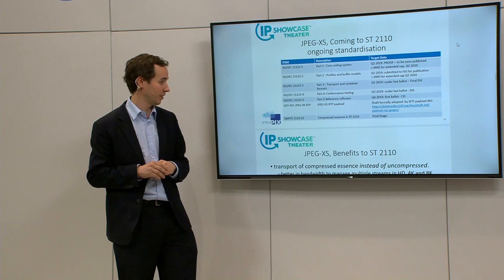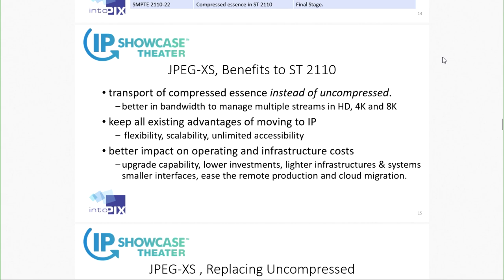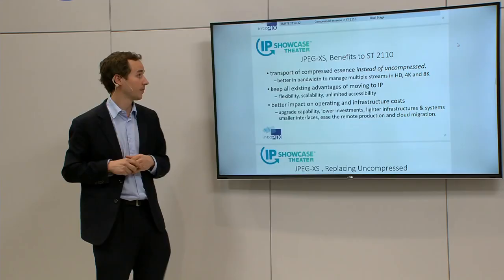In parallel, two initiatives help for video over IP workflow: the RTP payload for ST 2110-22, needed for encapsulation of JPEG XS streams over RTP, and work at the SMPTE level on ST 2110-22, which is nearly finished — the only thing remaining is to register JPEG XS as one of the compressed essences within that system. This brings the transport of compressed essence instead of uncompressed, better bandwidth management for multiple streams in HD, 4K, and 8K, and better impact on operating and infrastructure cost.